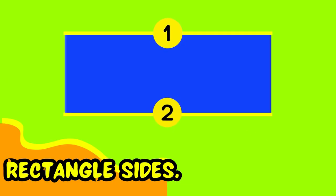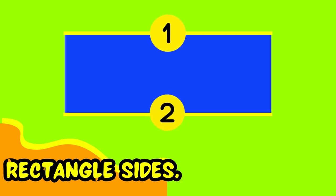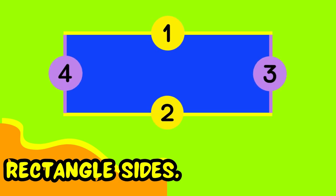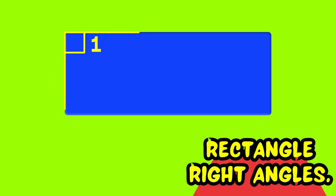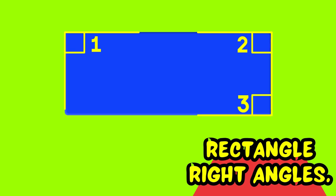Here are the two equal sides, 1 and 2. And here, another two equal sides, 3 and 4. Here is Angle 1, Angle 2, Angle 3, Angle 4.